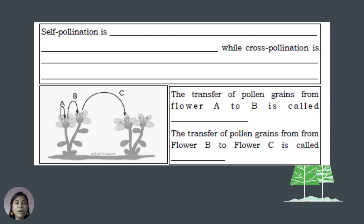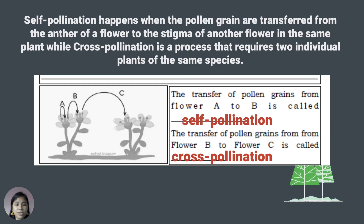Self-pollination happens when pollen grains are transferred from the anther of a flower to the stigma of another flower in the same plant, while cross-pollination is a process that requires two individual plants of the same species. The transfer of pollen grains from flower A to B is called self-pollination, while the transfer from flower B to flower C is called cross-pollination.